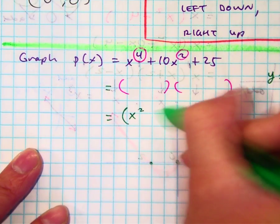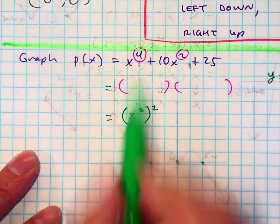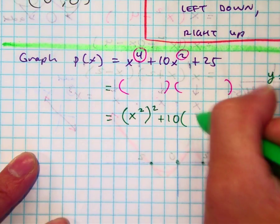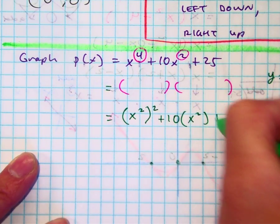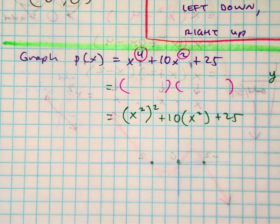So I'm going to write this as x squared to the second power. Do you see that? Does that still equal x to the fourth? Yeah. So now I'm going to write 10 times, in parentheses, x squared plus 25. You're not used to factoring a problem with the fourth power.